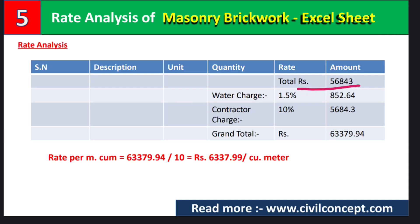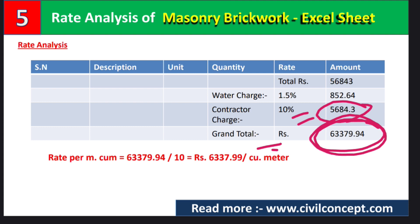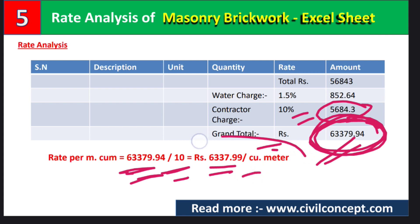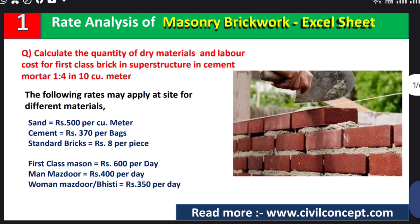To the total amount we add a water charge of 1.5%, which is rupees 852.64, and a contractor charge of 10–15%. At 10%, the contractor charge is rupees 5,684.30, giving a grand total of rupees 63,379.94 for 10 cubic meters. Dividing by 10, the rate per cubic meter of brick masonry is approximately rupees 6,337.99. You can download the Excel sheet from the link in the description. Please like and subscribe for more civil engineering updates.